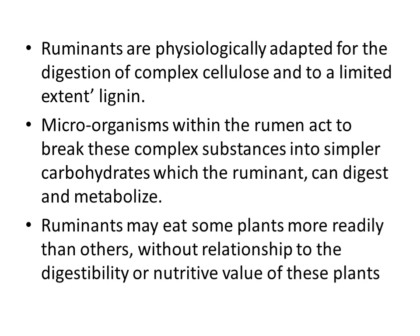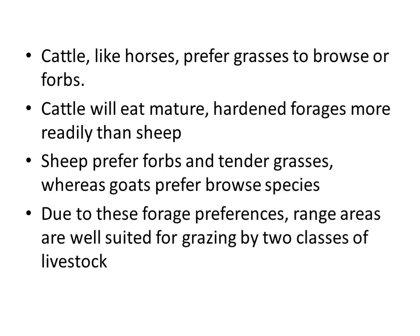Ruminants are physiologically adapted for the digestion of complex cellulose and, to a limited extent, lignin. Microorganisms within the rumen act to break these complex substances into simpler carbohydrates, which the ruminant can digest and metabolize. Ruminants may eat some plants more readily than others without relationship to the digestibility or nutritive value of those plants. Horses prefer grasses to browse or forbs, cattle will eat mature hardened forages more readily than sheep, sheep prefer forbs and tender grasses, whereas goats prefer both species.